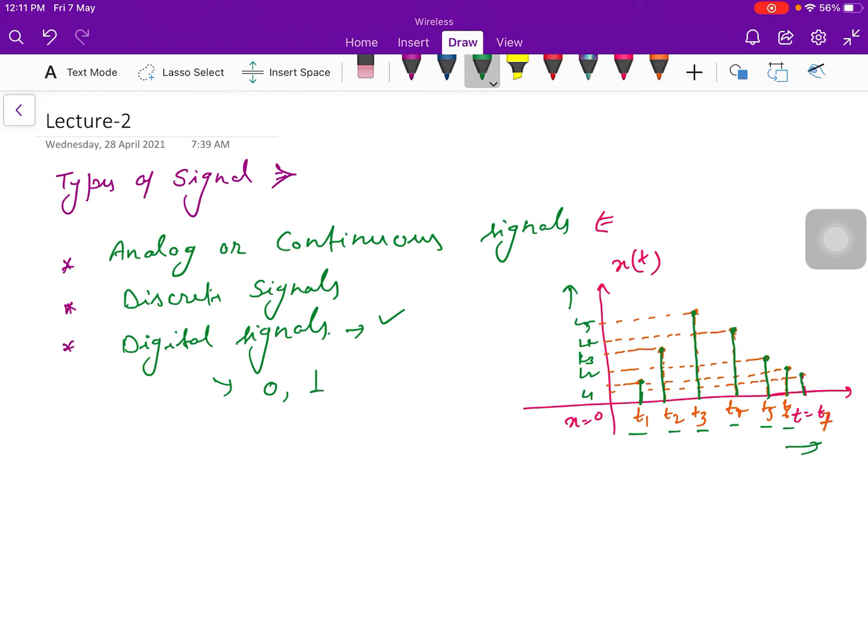Now if I talk about wireless communication, in wireless communication we use both signals - analog signal and digital signal, because most of the cases all the generalized signals, where the signal is generated, they are in the analog form. When we want to transmit this signal we use some converter - analog to digital converter for sending the data.